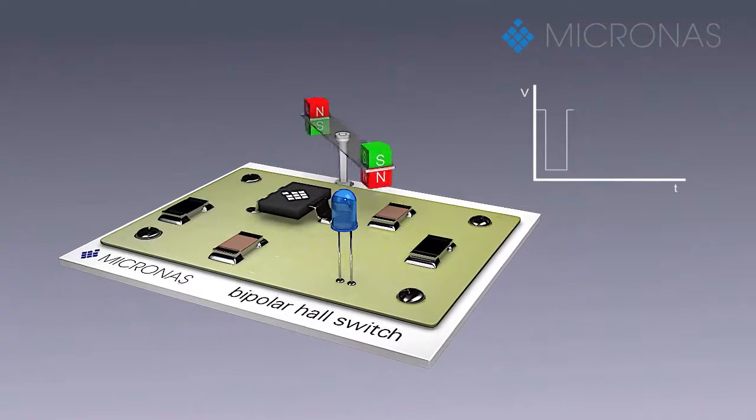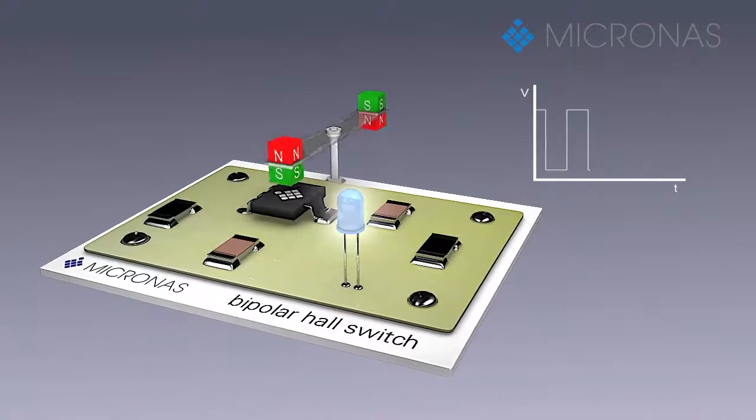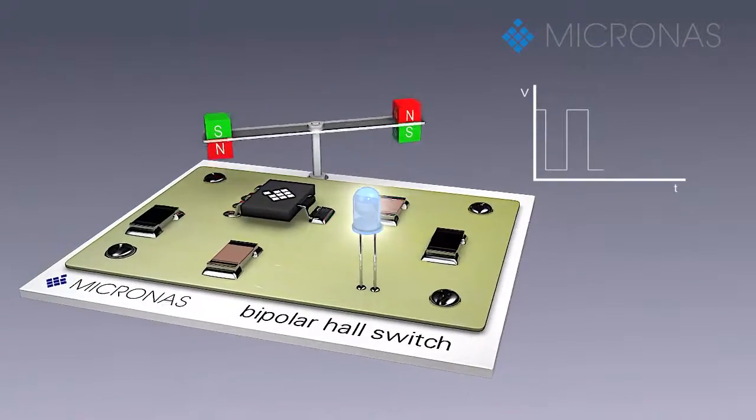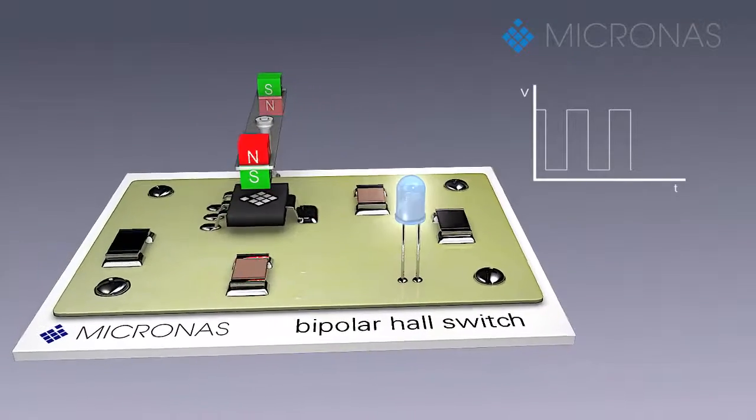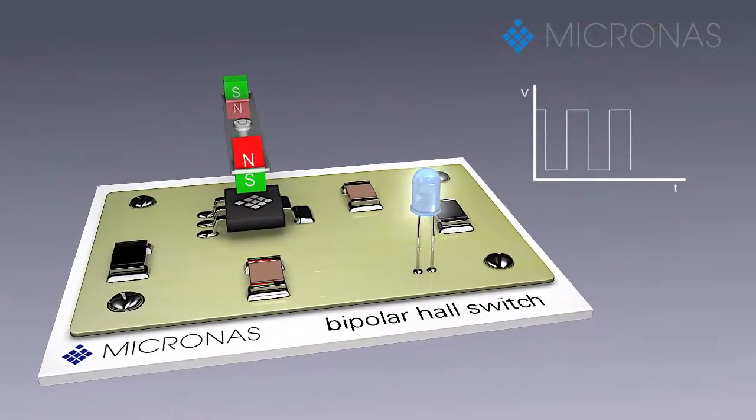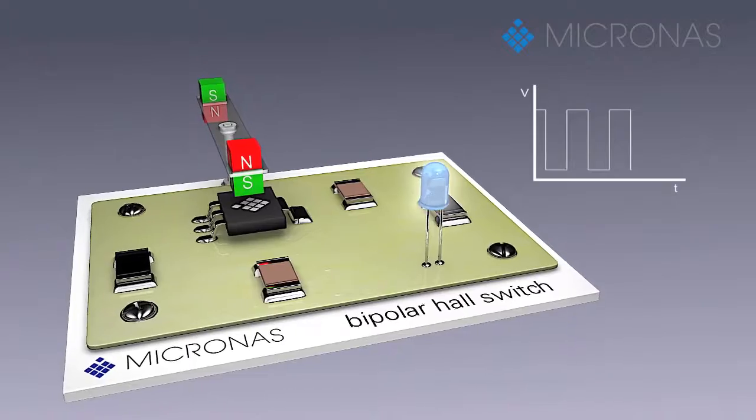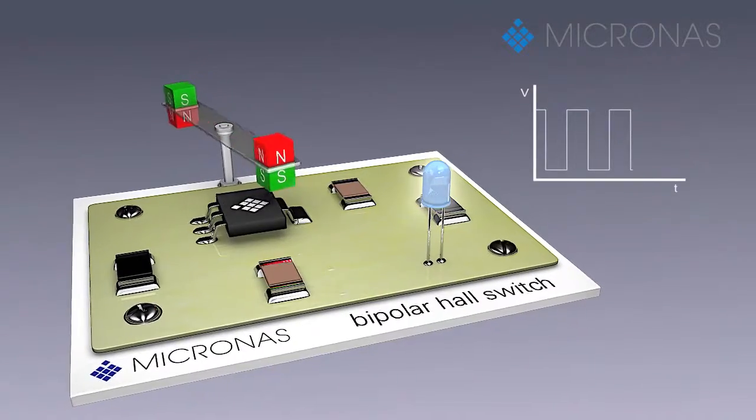It turns to high when the magnetic field strength of the north pole is lower than the specified switching value. If the magnet is removed, the output stage is not defined.